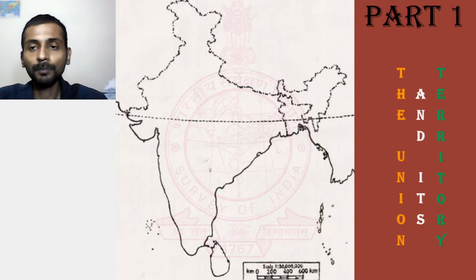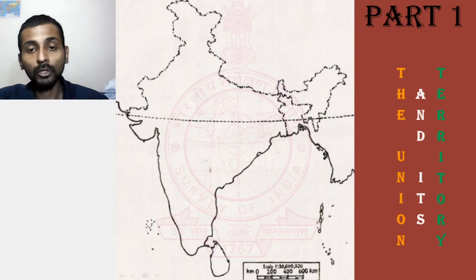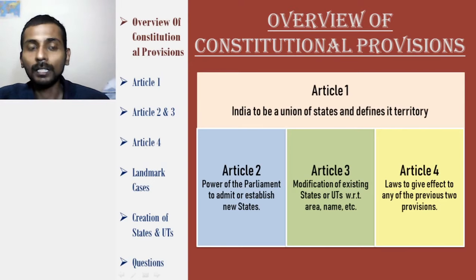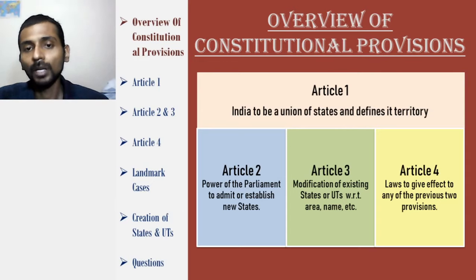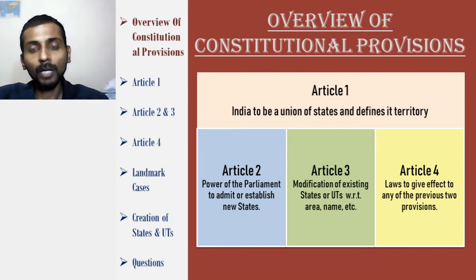Hello everyone, welcome. In this video I am going to talk about Part 1 of the constitution. You would know that Part 1 of the constitution basically defines what is India, tells the extent of Indian territory, and also tells some of the ways in which this territory can be appended or ceded. We will look into the four articles under Part 1 briefly and then examine them in detail.